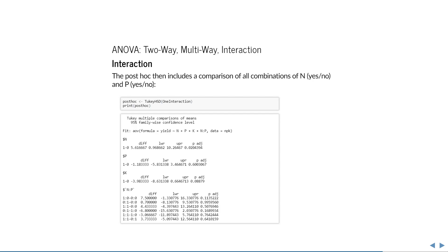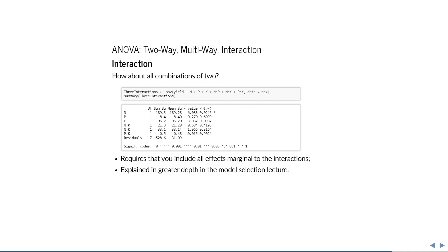If you include an interaction, then the post-hoc will contain a new tab that includes the effects of combinations of N and P. The first row shows the differences between adding nitrogen or nothing, the second row shows the difference between adding phosphate or nothing, the third row shows the difference between adding both or nothing, and so on. Each combination is compared. You can also add more than one such combination.